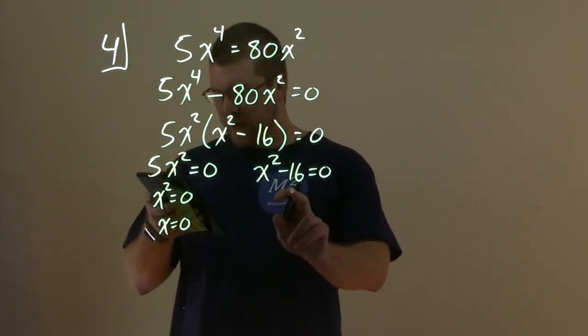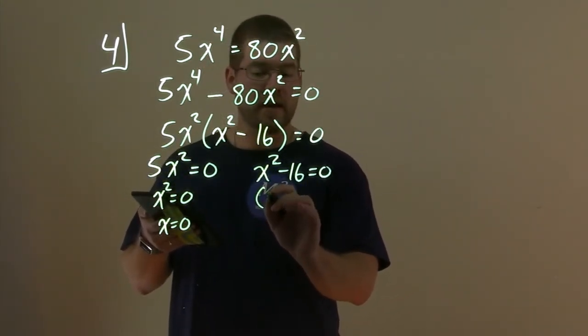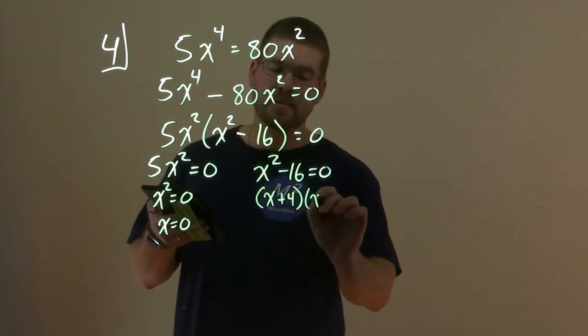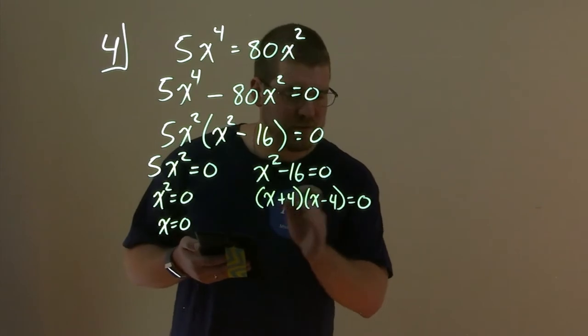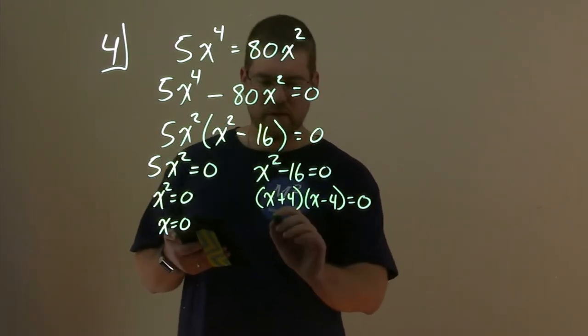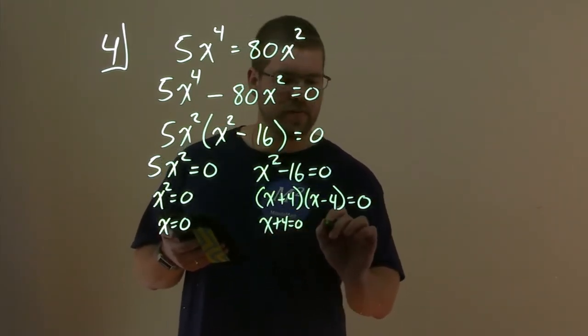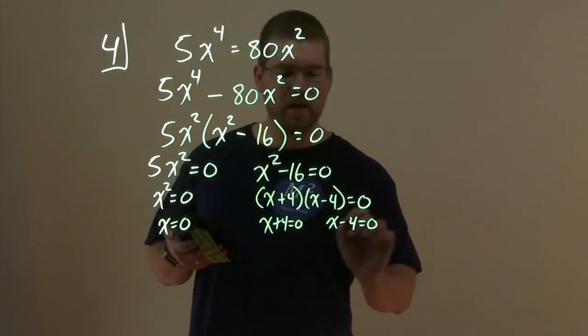This right one, x^2 - 16, can be broken down to be (x + 4)(x - 4) equals 0. And this one, again, we set both parts now equal to 0 a second time. x + 4 = 0. And x - 4 = 0.